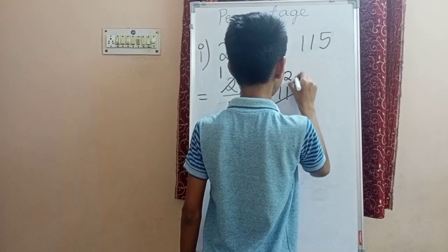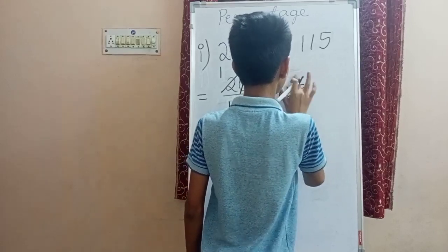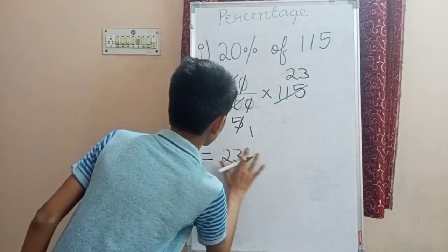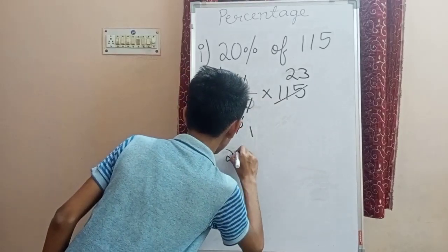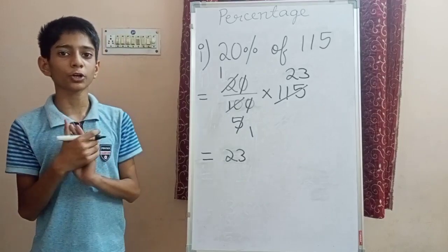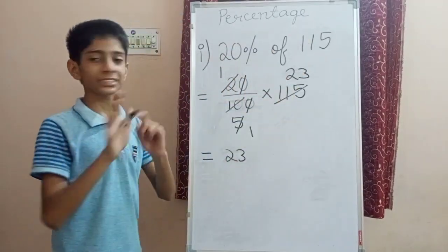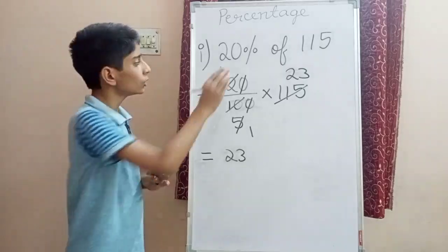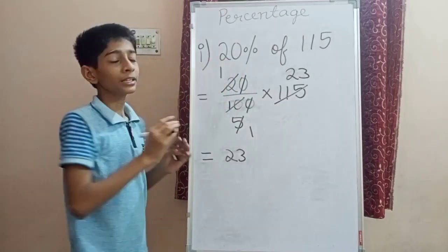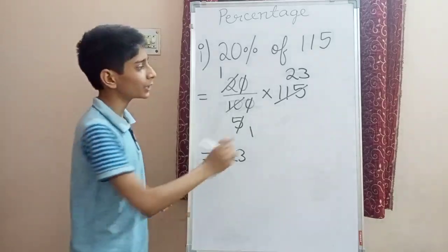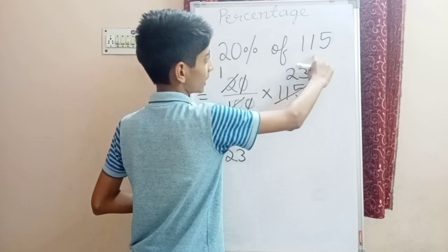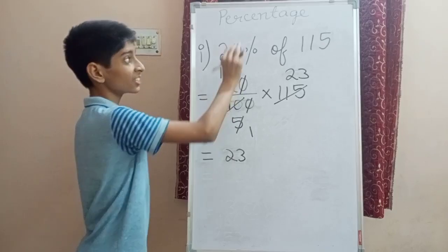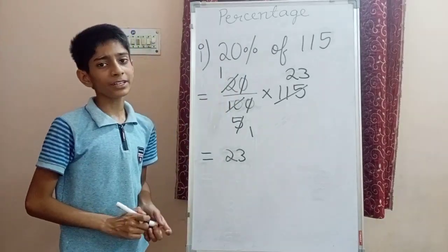After cancellation, we get 2 into 15, which gives us 30 — wait, two fives are ten and two ones are two, so the answer comes as 23. So 20 percent of 150 is 23. To summarize: we write the percentage as a fraction over 100, then multiply by the given number — that's 20 upon 100 into 150 — and the answer is 23.